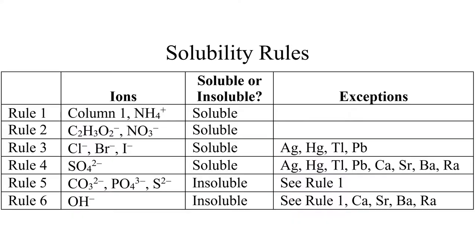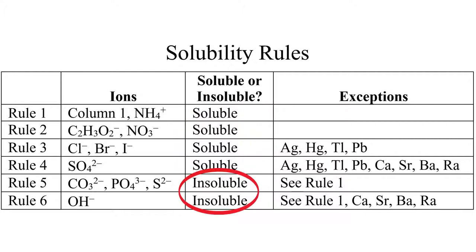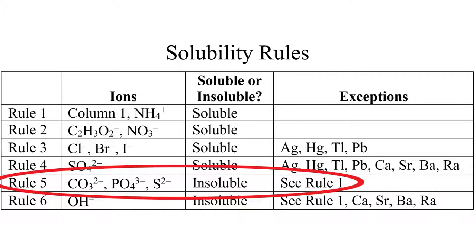There are two more solubility rules to know. So far, all of them have described compounds that are mostly soluble, except for a few exceptions. The last two rules describe cases where the compounds are almost all insoluble — so these are compounds that are usually precipitates. First, compounds that have an anion of carbonate, phosphate, or sulfide are all insoluble, except for the ones that have a cation described by rule one — that is, from column one of the periodic table, or ammonium.